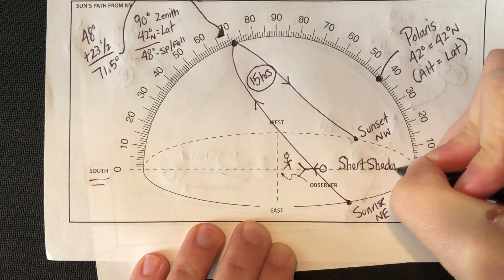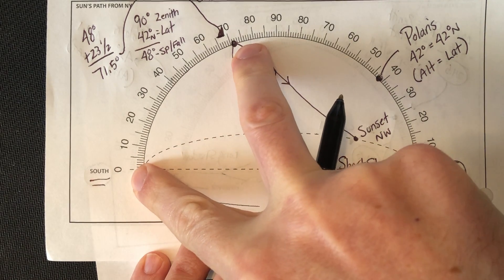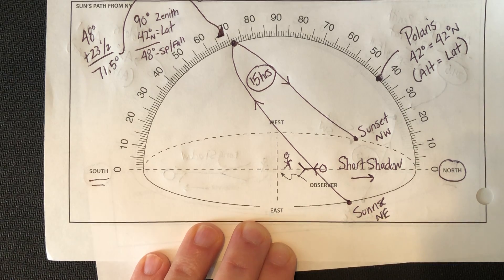Just recall that that shadow is going to be pointing north because your sun is in the southern sky. That shadow points north. Your shadow always points opposite where the sun is going to be.